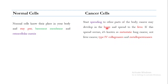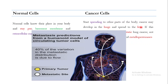When cancer cells get rid of the basement membrane and extracellular matrix, they spread to other parts of the body — for example, from the lungs into the liver. As shown in the image, the yellow area is the primary tumor, and the white spots are secondary tumors. About 40% of metastatic distribution is due to flow, as cancer cells enter the blood or lymphatic system and spread from their primary location to other parts of the body.